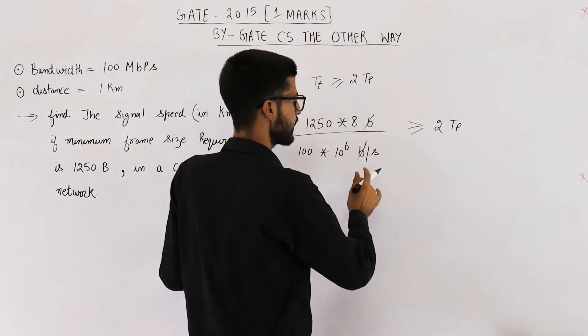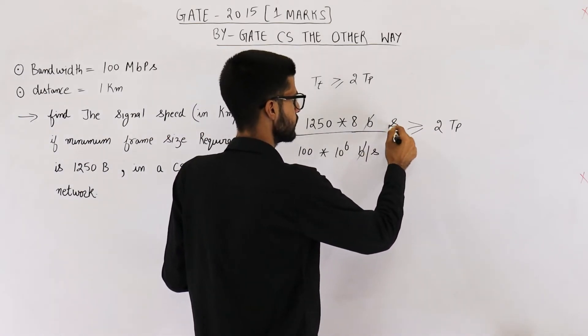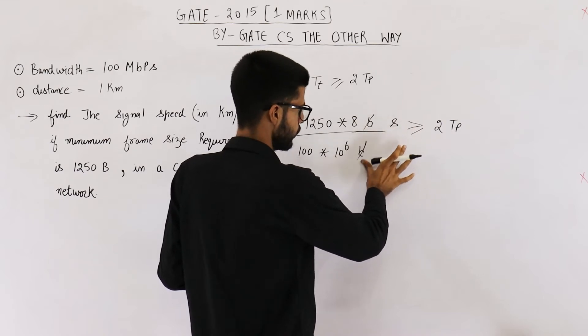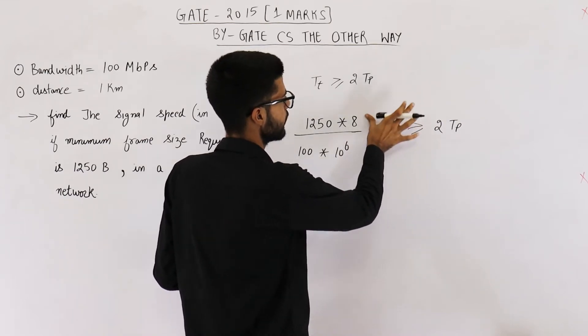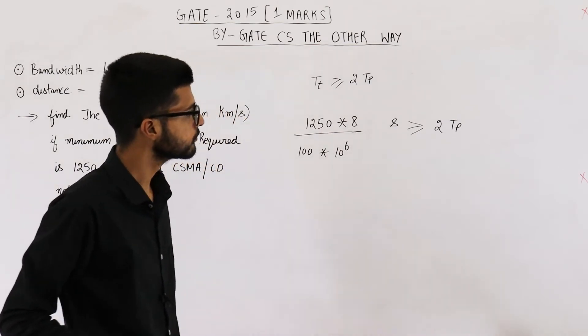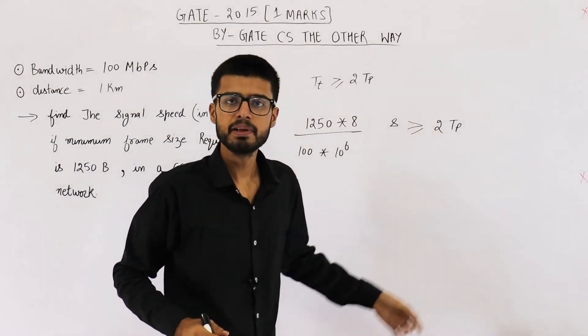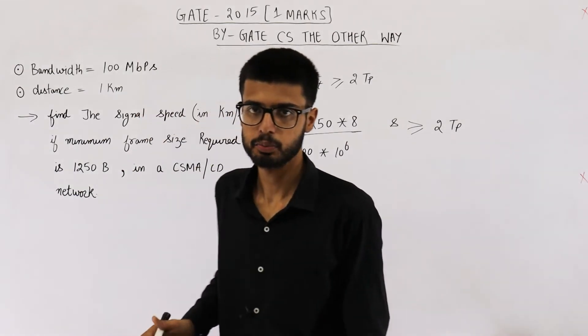Bits and bits will get cancelled. Per second will become seconds when written in numerator. So, this is what you get. These many seconds. And value of TP is dependent on the signal speed.